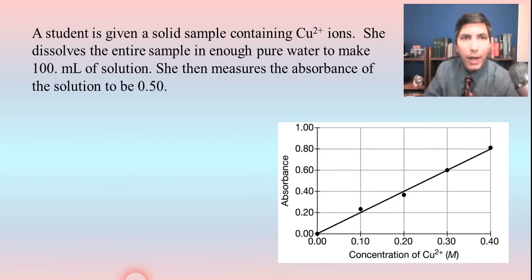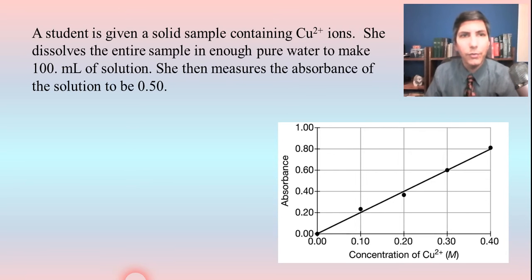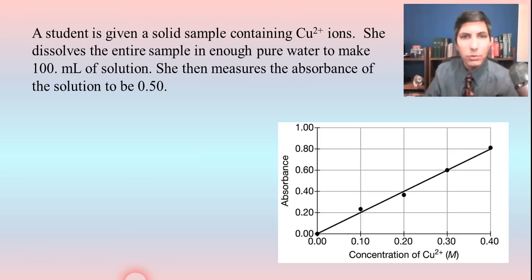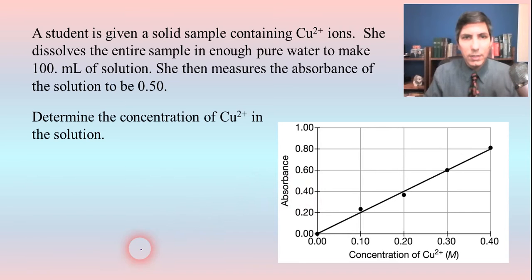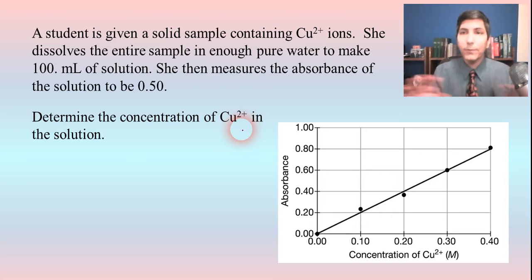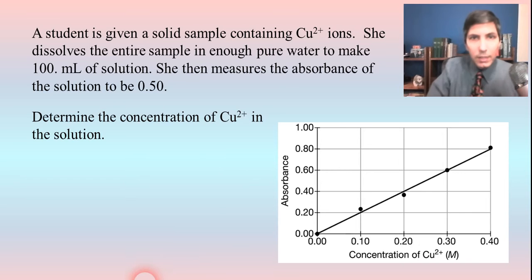Let's do some problems. Here we have a student who's given a solid sample containing some copper ions. She dissolves the entire sample in enough pure water to make 100 milliliters of solution. She then measures the absorbance of the solution to be 0.50. Here I have the calibration curve for this experiment. The question is: determine the concentration of copper ions in the solution.